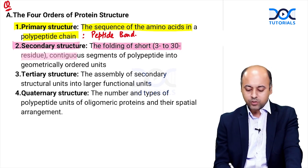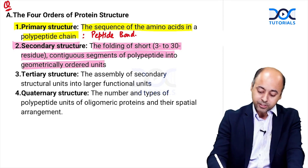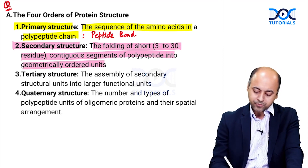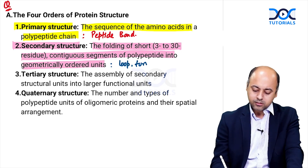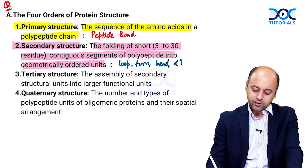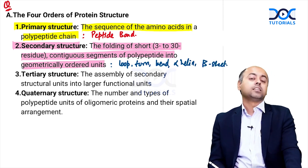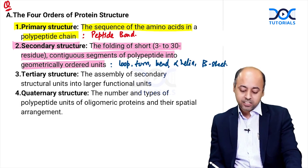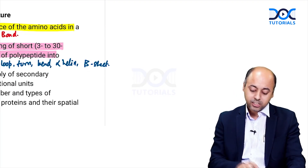Secondary structure is the folding of 3 to 30 contiguous segments of a polypeptide into a geometrically ordered unit. Examples of these geometrically ordered units are the loop, turn, bend, alpha helix, and beta pleated sheet — all of these are secondary structures.